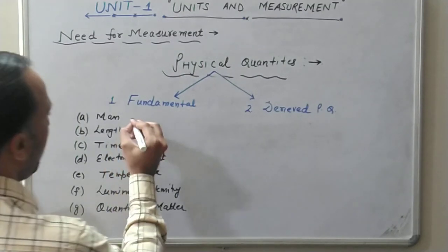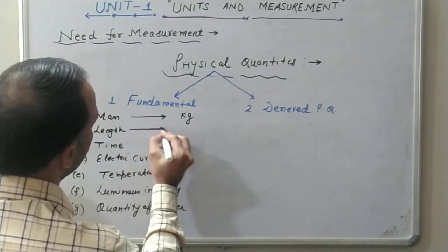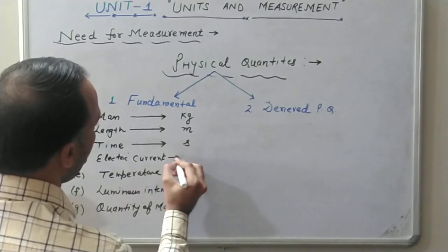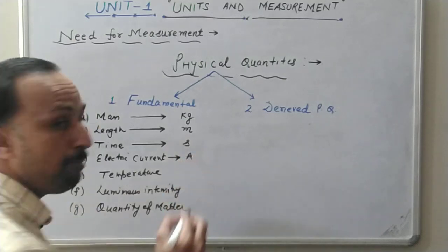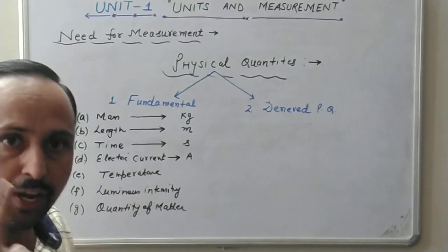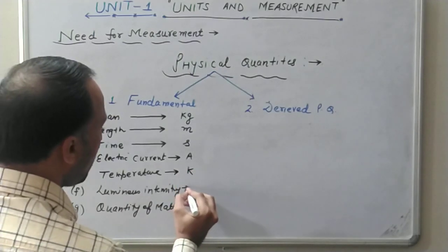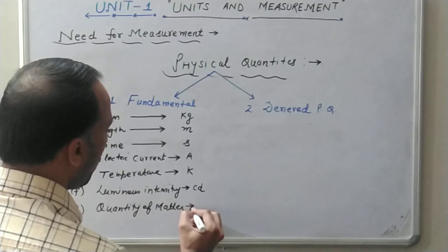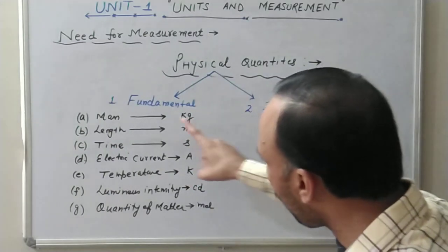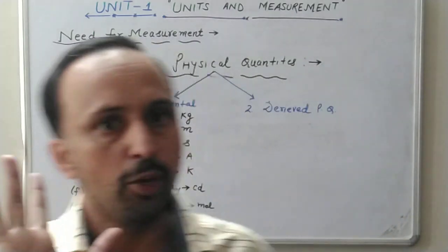The unit for measurement of mass is kilogram. The unit for length is meter. The unit for time is second. The unit for electric current is ampere — symbol capital A. Temperature is measured in kelvin — symbol K. Luminous intensity is measured in candela. And quantity of matter is measured in mole. These units are known as fundamental units.